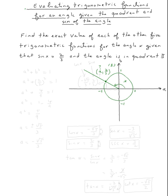All I need to do is find a, and the problem will be easy. Because this point is on the unit circle, I know that a² + b² = 1. So a² + (2/3)² = 1, which gives a² + 4/9 = 1, so a² = 1 − 4/9 = 5/9.